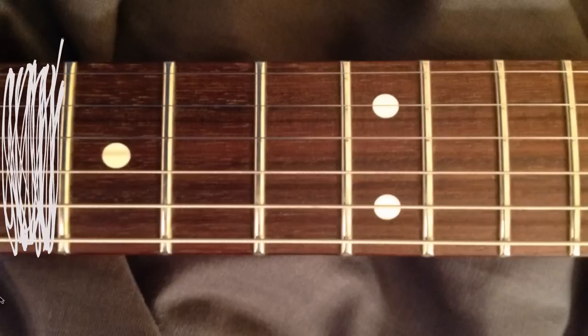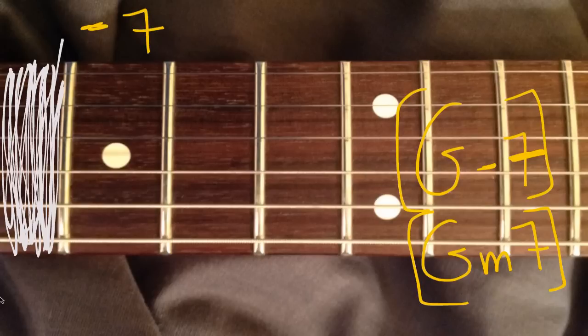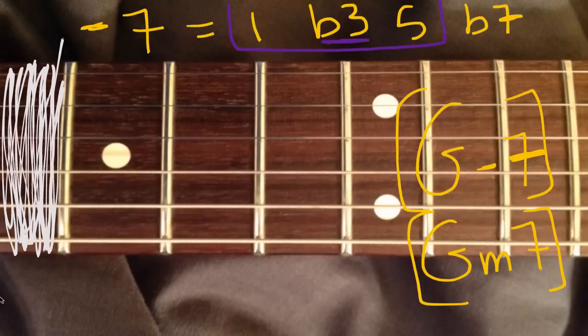So what we're trying to do is a G minor seven. Remember, you can either write it like that or like this. They mean the exact same thing. And the definition of a minor seven is one, flat three, five, flat seven. So this is more like a minor chord because we have one, flat three, five. That flat three is making a minor chord. And the flat seven is also part of a minor scale.